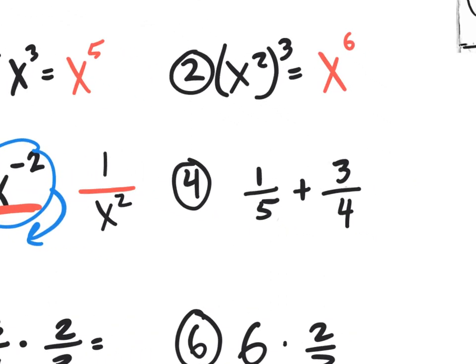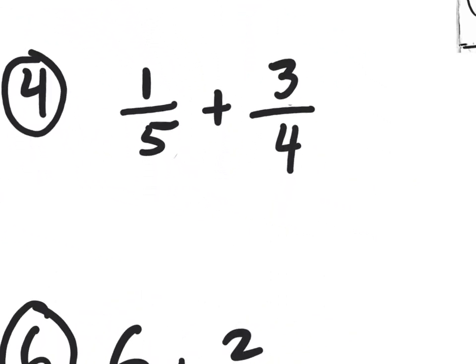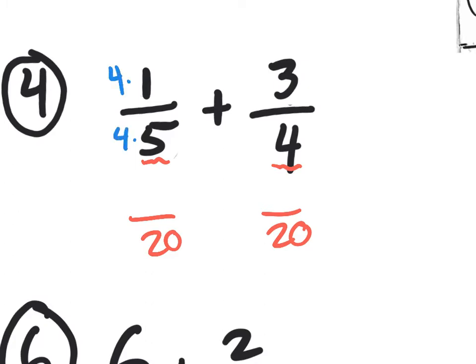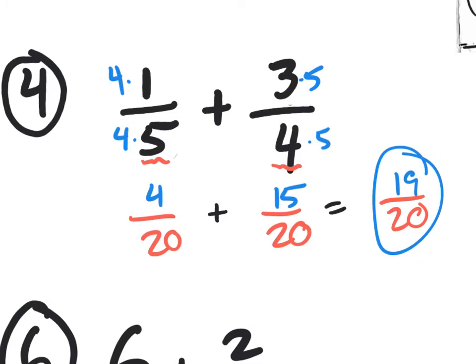Number 4: in order to add two fractions, what do I need? A common denominator. When you're adding or subtracting fractions, the denominators must be exactly the same. So we change both to 20. To change 5 into 20, multiply by 4 — so you get 4 up on top. For the second fraction, multiply 4 by 5 to get 20, giving you 15 on top. Now with a common denominator of 20, add 4 plus 15 to get 19 over 20. Reduce if possible.